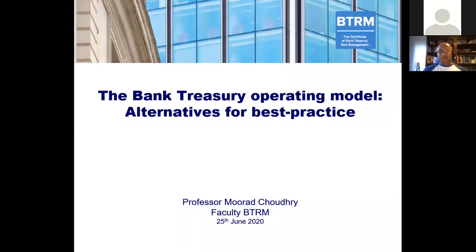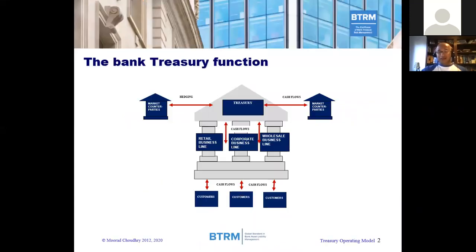Hello everybody. In this presentation we're going to look at the bank treasury operating model and the various alternatives that one observes in the market. The objective is to determine what we consider the most appropriate operating model for any specific bank in question. The treasury function sits on top of the other business lines and interacts internally with them, almost like an internal banking or clearing function — a bank within a bank — and also deals externally with the street or market for hedging and cash management purposes.